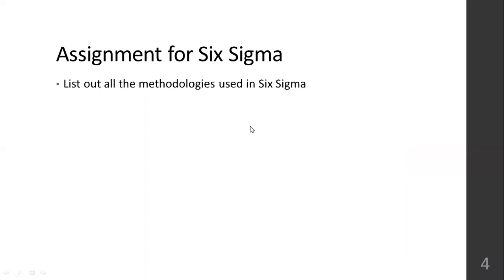A small assignment: using your textbook or Google, list all the methodologies used in Six Sigma. Write them down or create a file. Methodologies include DMAIC, DFSS, and DMADV. Find out what other methodologies exist beyond those mentioned in the textbook that can be used to conduct a Six Sigma project, then write down the differences between them.